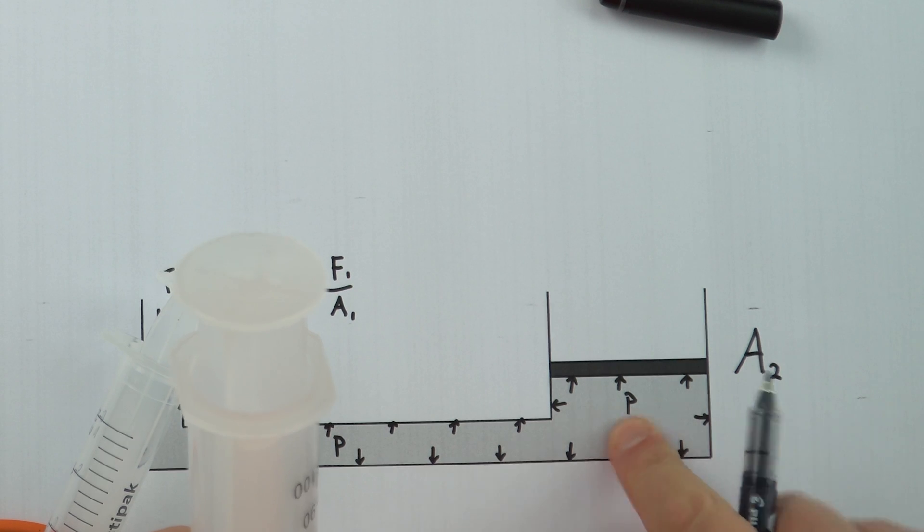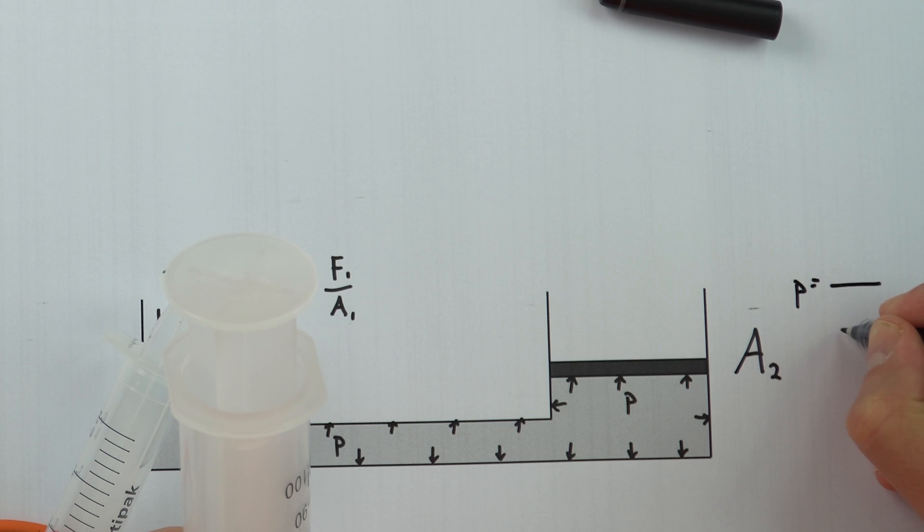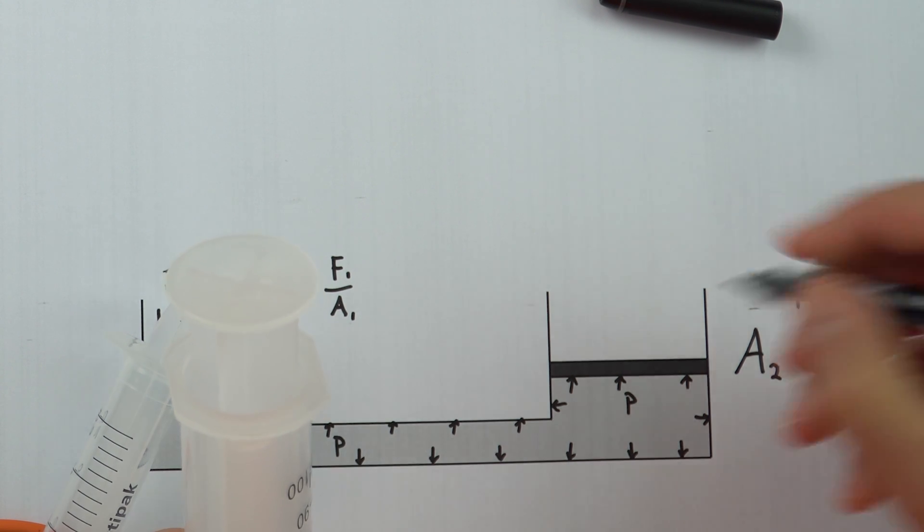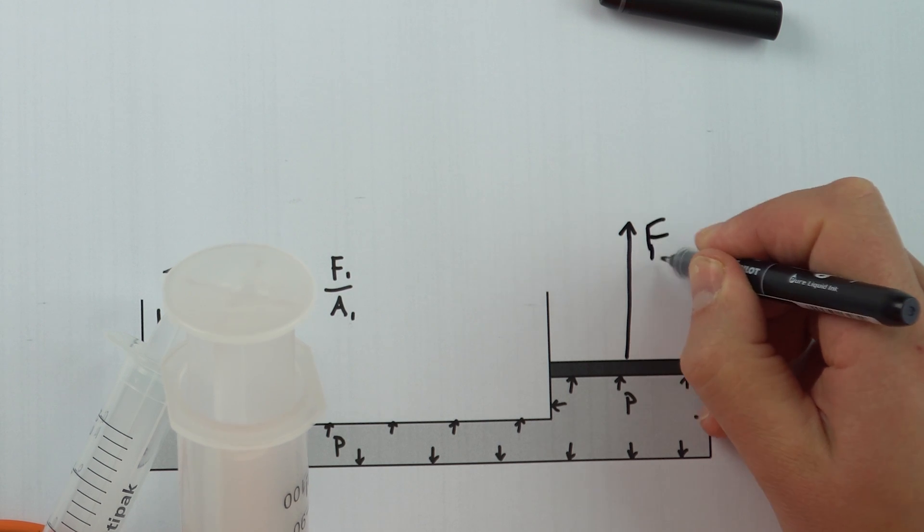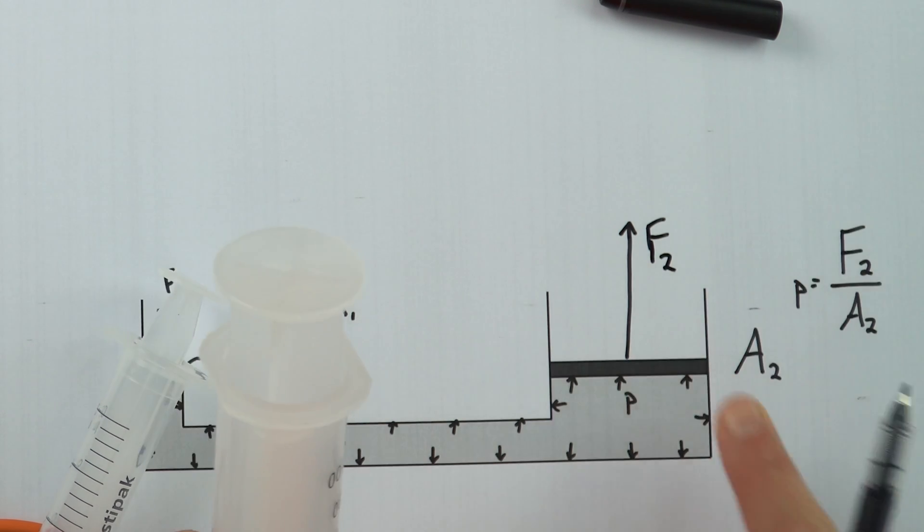The pressure in that liquid is the same and we know that the pressure is equal to the force divided by the area. But now we've got a bigger area we also have a bigger force which I'm going to call F2. I'm just going to draw this bigger arrow up and that's F2 over here.